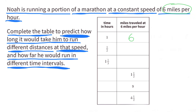If the time in hours was 1, and he's running 6 miles per hour, then the miles traveled at 6 miles per hour would be 6. If the time in hours was a half hour, 1 half is half of 1, so half of 6 would be 3. At 6 miles per hour, the distance traveled after 1 half hour would be 3 miles.